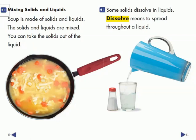Mixing solids and liquids. Soup is made of solids and liquids. The solids and liquids are mixed. You can take the solids out of the liquid. Some solids dissolve in liquids. Dissolve means to spread throughout a liquid.